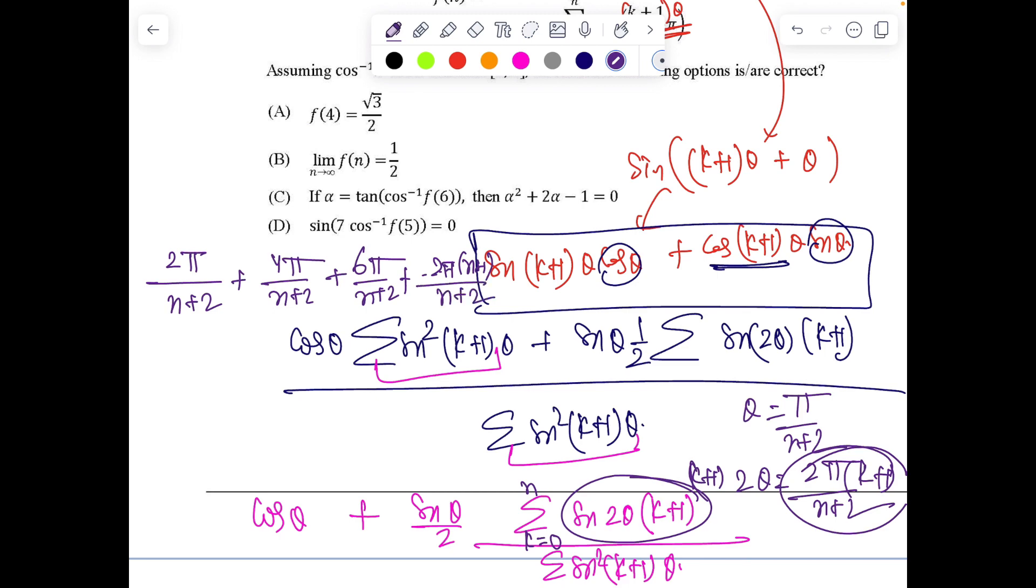And thereafter, the last term will be, of course, 2 pi n plus 2 by n plus 2. So now we can recognize, of course, sign of this, we need to find, right? So this can be thought in a geometrical plane. As if the first term represents, as if the entire circle is divided into n plus 2 equal parts. So it's basically n plus 2 root of unity.